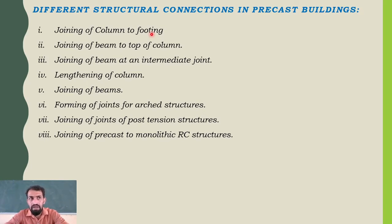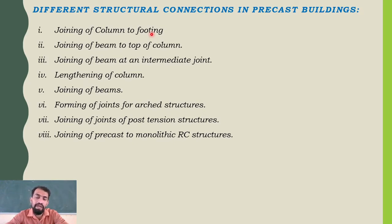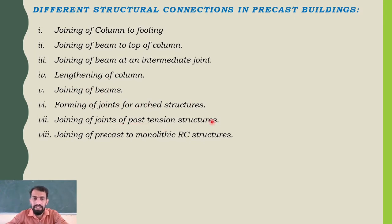The footing is laid and after about seven days — or nowadays a minimum of four days — column casting starts, because footing and column are erected with the same steel. In prefabricated structures, this particular approach will not be the same. We will cover: joining of column to footing, joining of beam to top of column, joining of beam at an intermediate point, lengthening of column, joining of beams, forming joints for arched structures, joining of post-tensioned structures, and joining of precast to monolithic RCC structures.